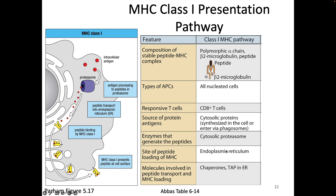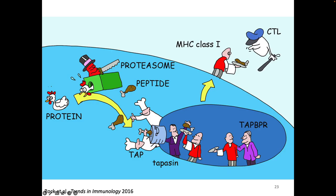Here is my general overview of the class 1 presentation pathway. We've got a protein with multiple parts — multiple epitopes, like the wing versus the leg. The proteasome is going to cut up that protein into those different parts. TAP and tapasin are going to move those parts to the MHC molecule so that the MHC molecule can present that epitope on the surface of the cell.